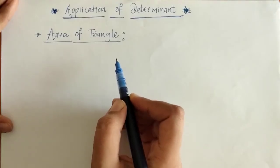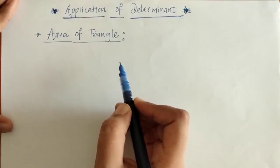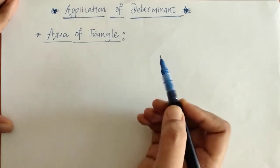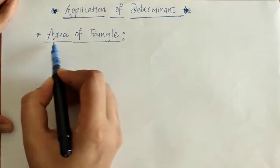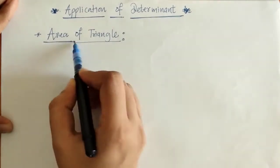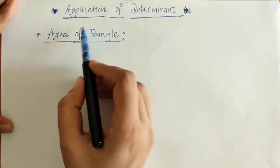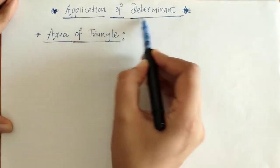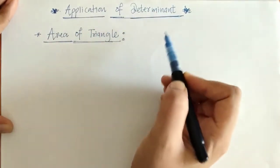Hello everyone, welcome to Unlock Maths. Today we will learn how to find the area of a triangle by the application of determinants.